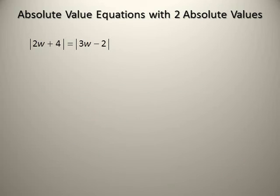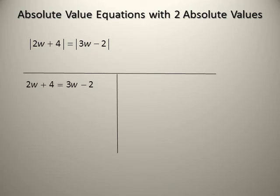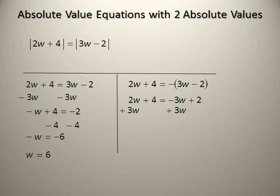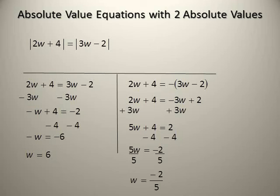When we have absolute equal to absolute, |2w + 4| = |3w − 2|, we change the sign of one of them. So 2w + 4 = 3w − 2 or 2w + 4 = −(3w − 2). First: −w = −6, so w = 6. Second: 2w + 4 = −3w + 2, giving 5w = −2, so w = −2/5. Check your answers. The solution set is {−2/5, 6}.